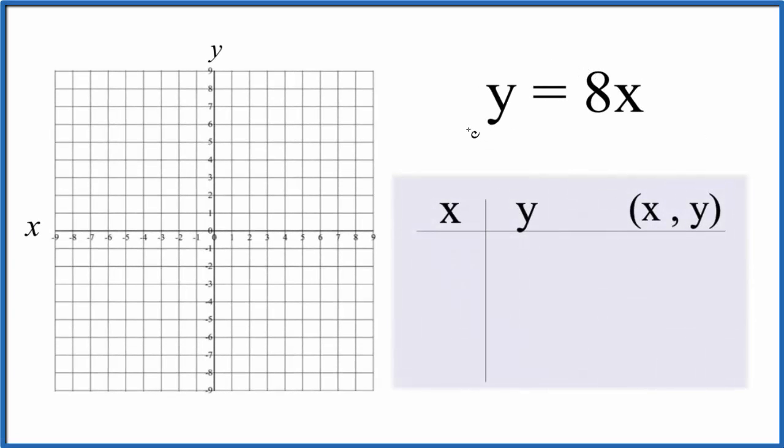Let's graph the linear equation y equals 8x and we're gonna do it two ways. We'll do a table of values first, put some values in for x, find y, and then graph those points here on our graph. After that we'll look at slope-intercept formula just to make sure we got the right answer.